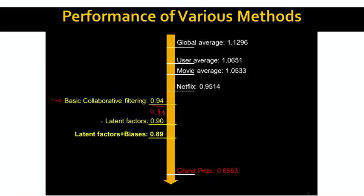We saw that basic latent factors are at 0.9 and latent factors, including biases, are at 0.98. So using clean methods, this is as close as we can get to the grand prize of 0.85 error. The question is, how do we go and achieve this final gap? And lots of work actually went in closing this last final gap before the $1 million prize.